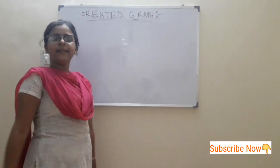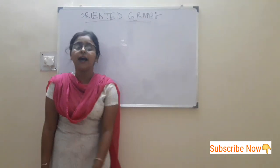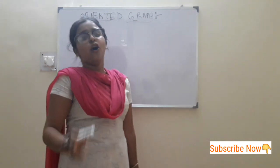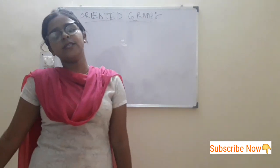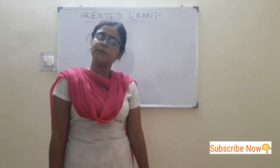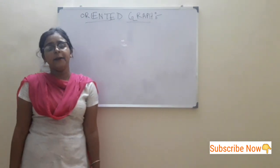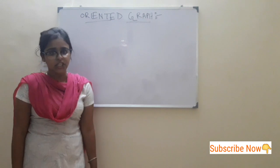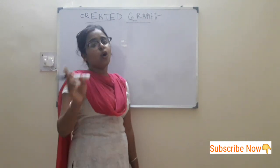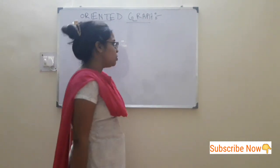What is oriented graph? A graph is called an oriented graph when all its nodes are named, all its branches are numbered, and arbitrary orientations are assigned to all its branches.